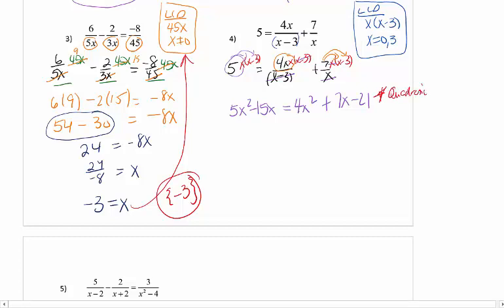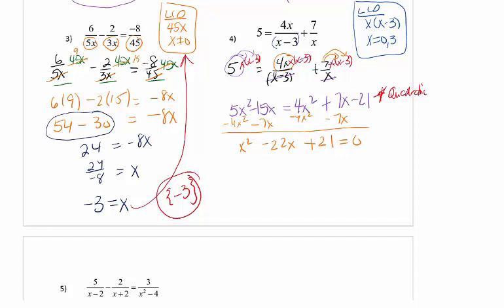You should see right here, I got a quadratic. If I get a quadratic, I need to move everything to one side and set it equal to 0. So I'm going to subtract 4X squared from both sides. So when I subtract that, I get an X squared. I'm going to subtract 7X from both sides. So that gives me a negative 22X. And then I need to move the 21 over. So I'm going to add it to both sides.